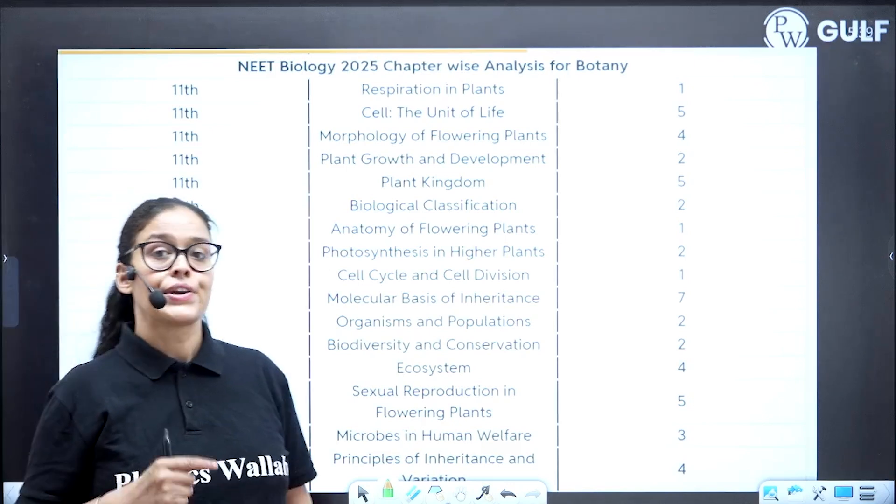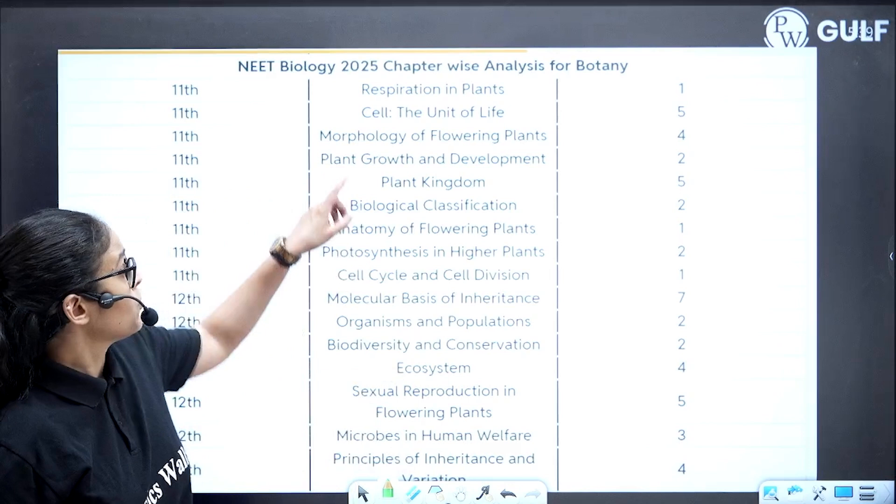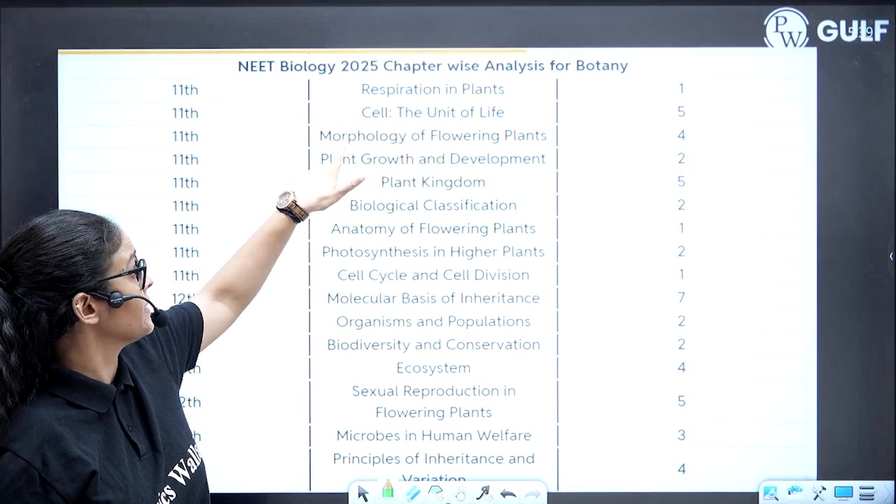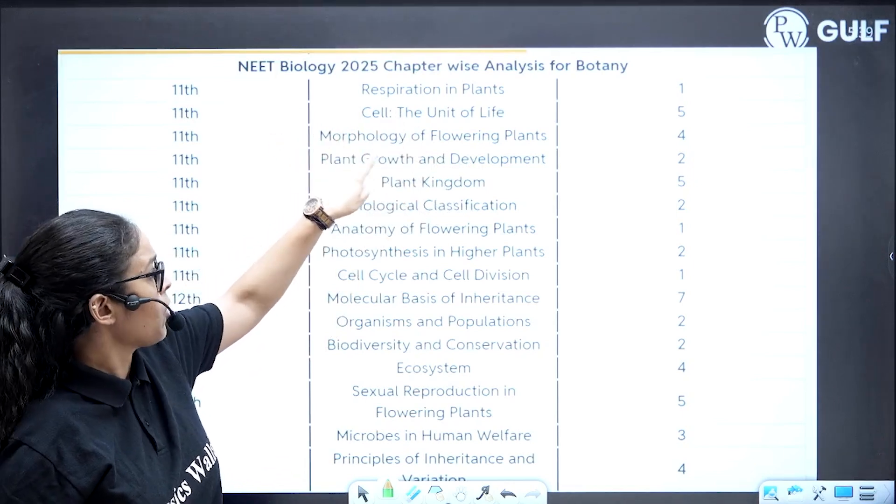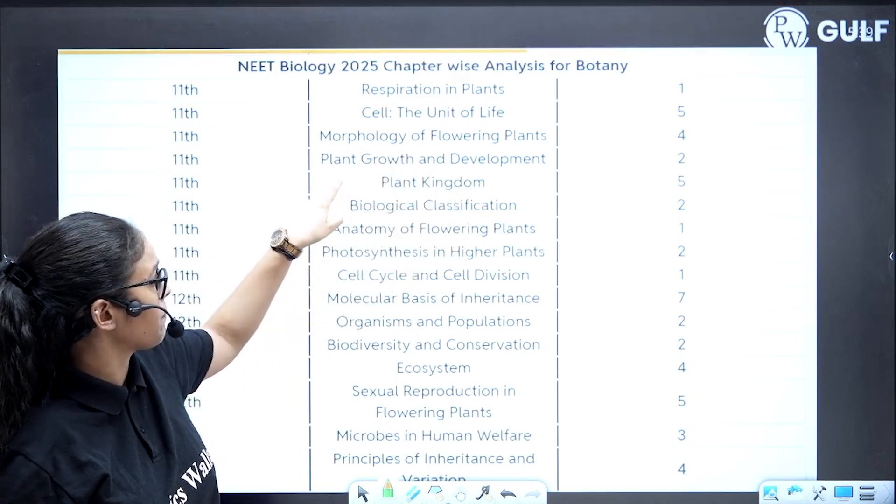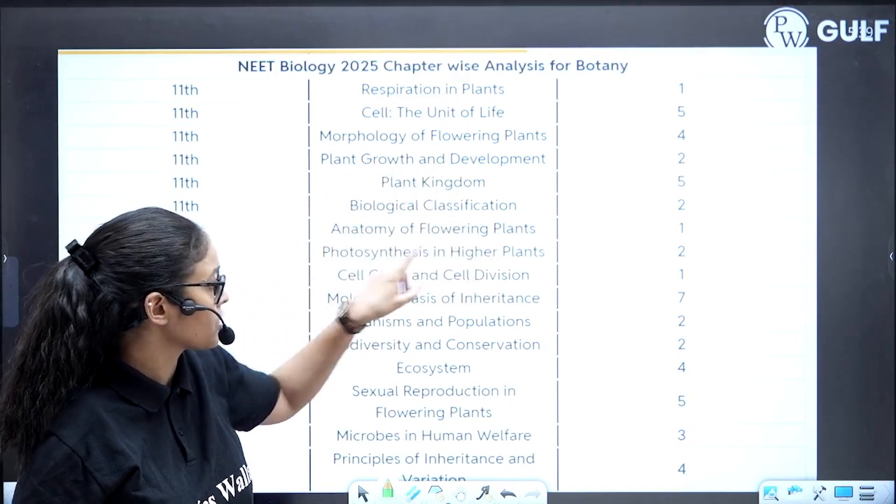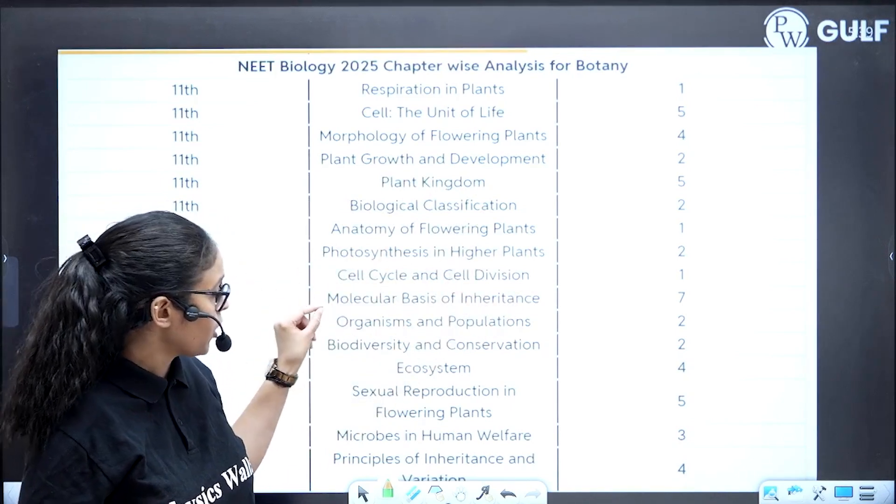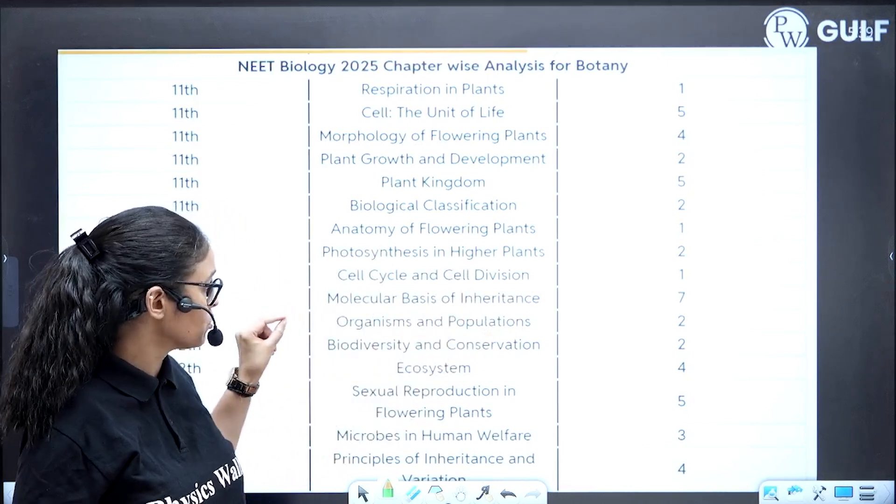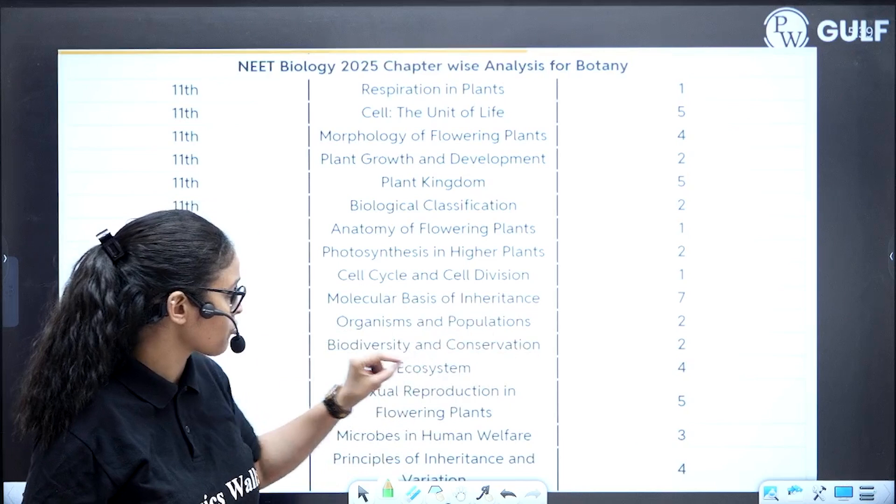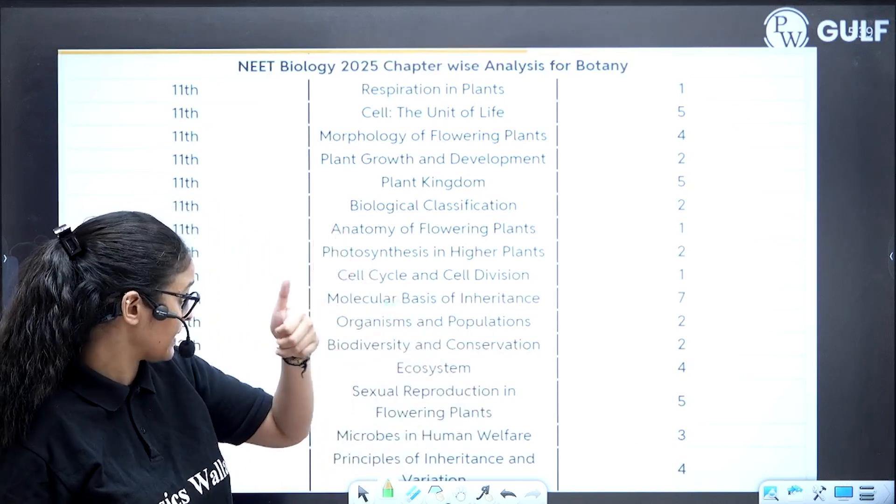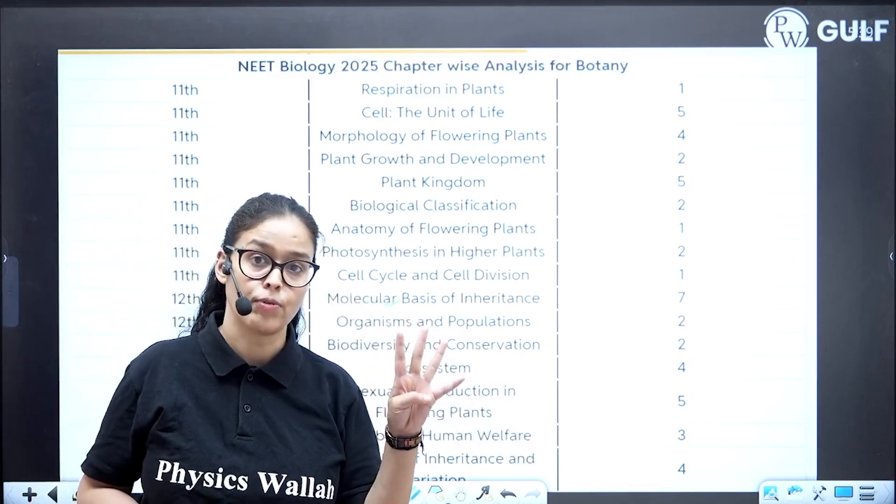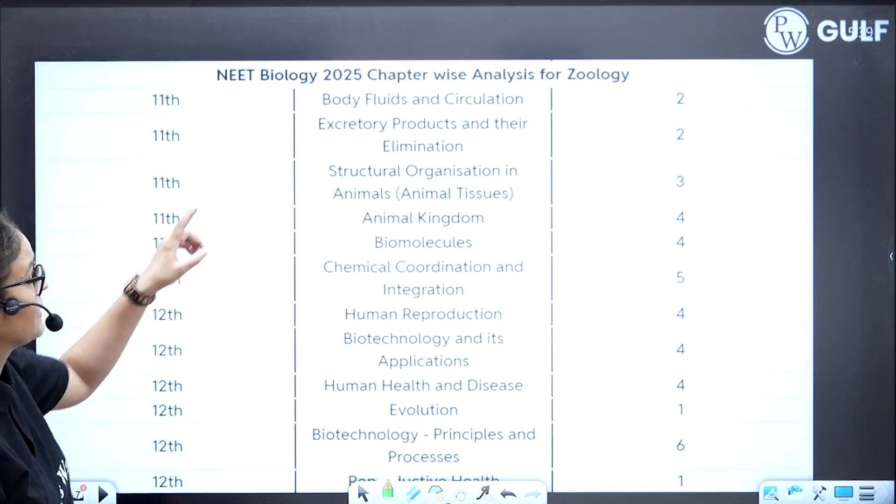Number of questions from specific chapters in botany: respiration in plants one, cell unit of life five questions from this small chapter, morphology in flowering plants four questions, plant growth and development two, plant kingdom five, biological classification two, anatomy of flowering plants one, photosynthesis in higher plants two, cell cycle and cell division one, molecular basis of inheritance seven, organism and population two, diversity and conservation two, ecosystem four, sexual reproduction in flowering plants five, molecular basis of inheritance seven questions, microbes alone from this small chapter three questions, principles of inheritance four questions.